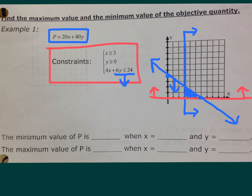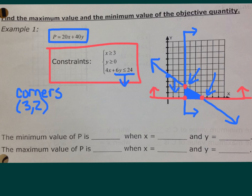That gives us a shaded triangle. All lines are solid — no dotted lines. Now we need to find our vertices: this corner, this corner, and this corner. When you find intersections of two lines, you're solving a system — use substitution, graphing, elimination, whatever you want. In this case it's easy to see on the graph. Our corners are (3, 2), (6, 0), and (3, 0). Always write them down.